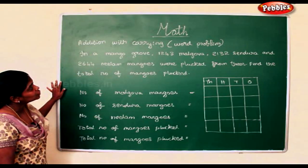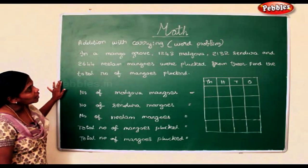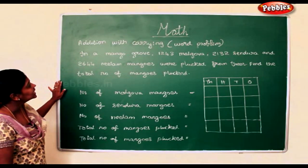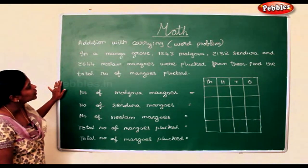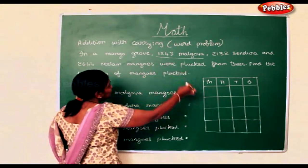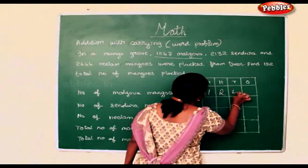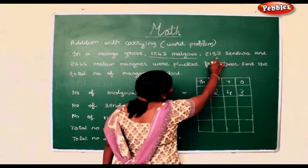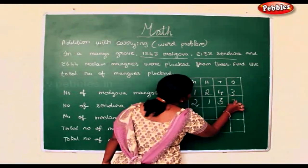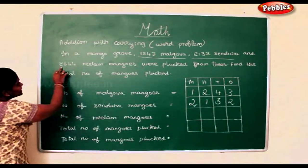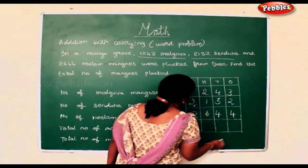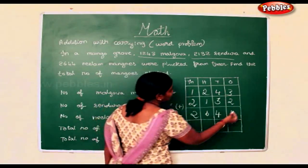In a mango grove, 1,243 malgova, 2,132 sindura, and 2,644 neelam mangoes were plucked from the trees. Find the total number of mangoes plucked. So we have to add these 3 numbers.